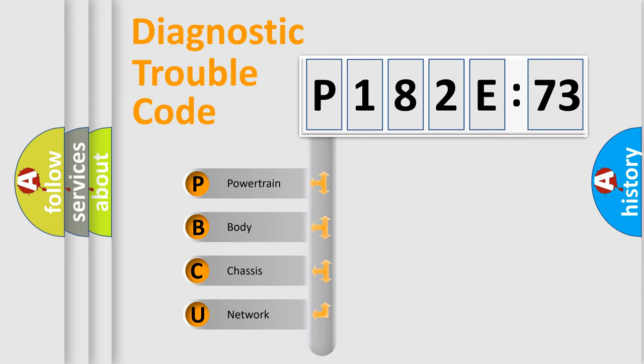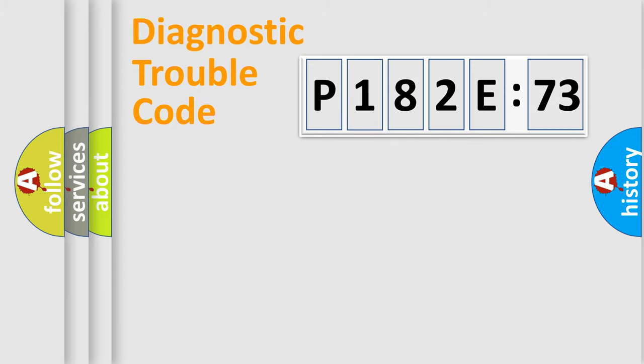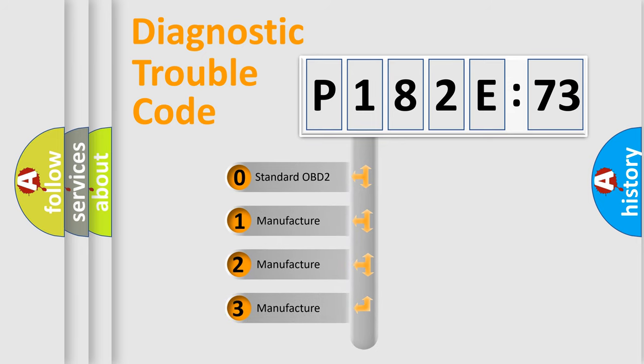If the second character is expressed as zero, it is a standardized error. In the case of numbers 1, 2, 3, it is a more specific expression of the car specific error. The third character specifies a subset of errors. The distribution shown is valid only for the standardized DTC code.